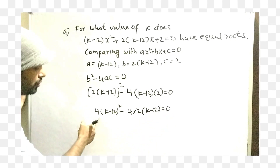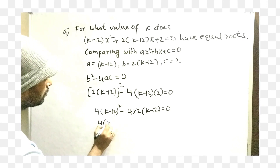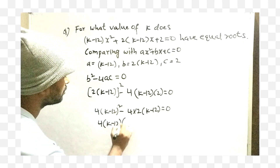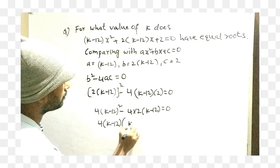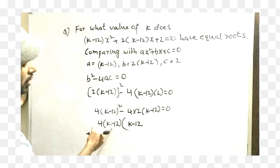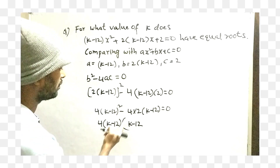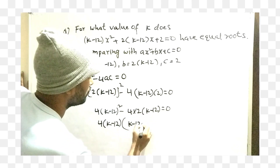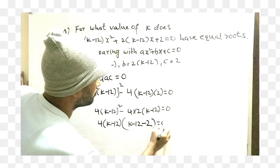We will take 4 into (k minus 12) as a common factor. Taking 4(k minus 12) common: (k minus 12) whole squared means two times — one time is common, remaining is one more time — so we get 4(k minus 12) times [(k minus 12) minus 2] equals 0.